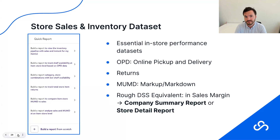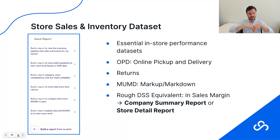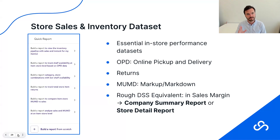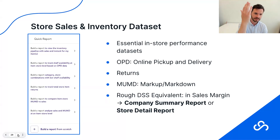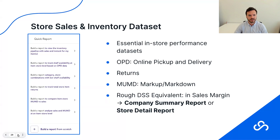Within each data set they have preset reports already built out, and then an option to build a report from scratch within that data set. You can build any report from scratch, pulling whatever business elements you want. Most of the reporting you'll be doing will be within these data sets. Store sales and inventory is massive — that's most of what Luminate Basic users will be using the most. The rough DSS equivalent would be the sales margin company summary report or the store detail report.